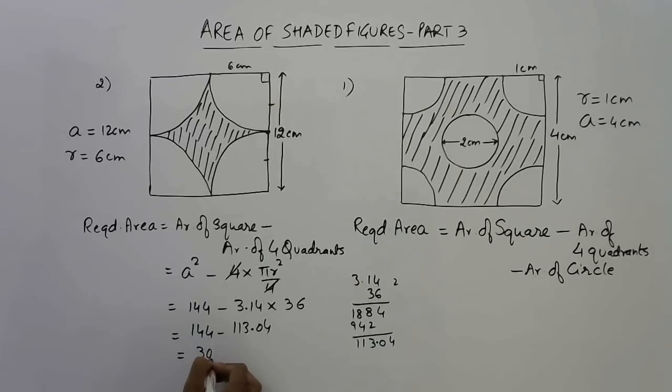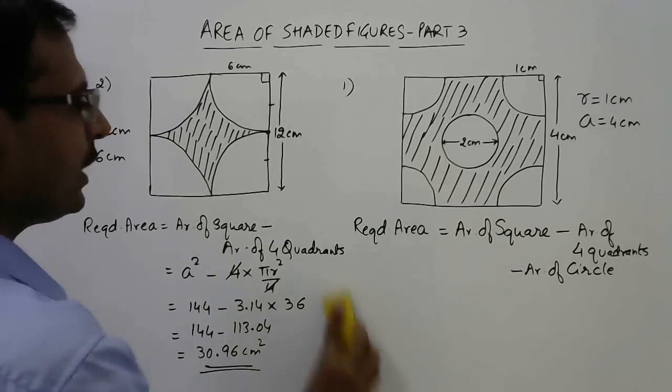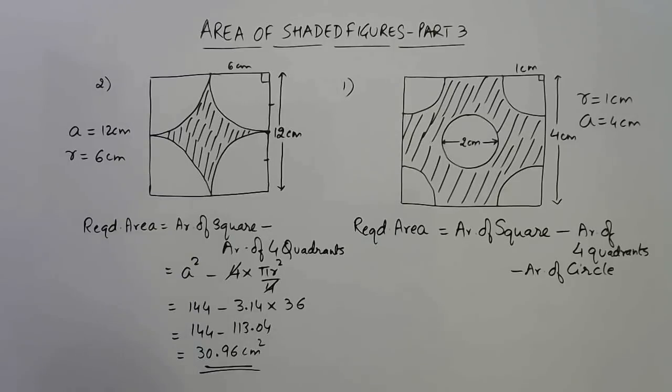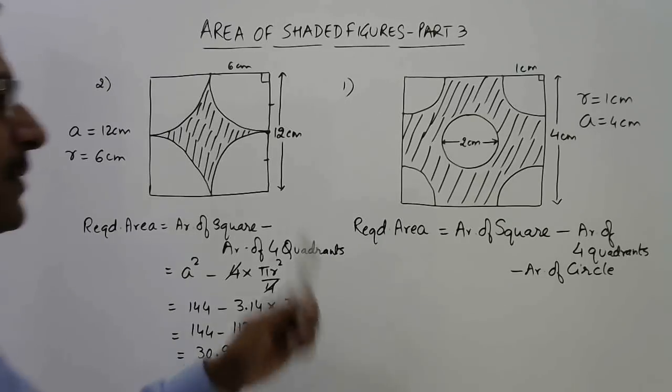If you subtract this you are going to get your final answer. So 30.96 centimeter square. This is the answer for this question. The time I have taken is only for that multiplication which I did, 3.14 into 36. Otherwise the question was a basic question of area of shaded figures.